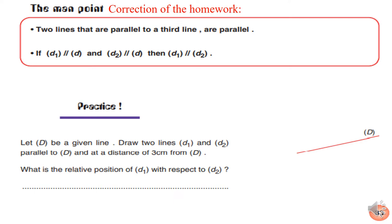First, let's correct our homework. The practice, page 33. Let (E) be a given line. Draw two lines (d1) and (d2) parallel to (E) and at the distance of 3 cm from (E). Then we have to use the ruler to measure 3 cm, right? Then we have to put the first point here on 0. I will use the ruler one more time to put another point. Then we join them.